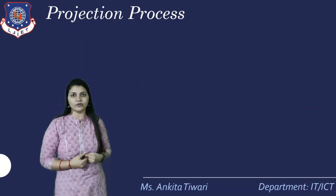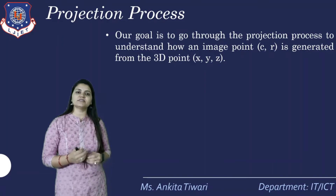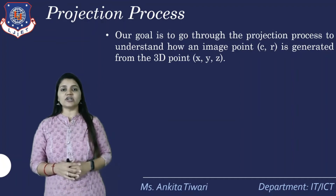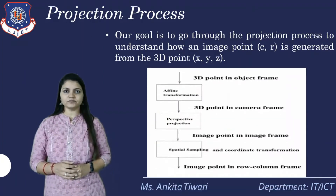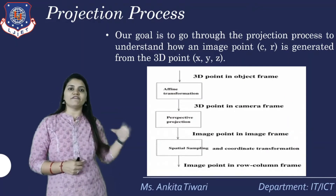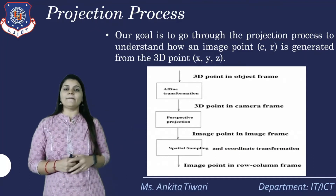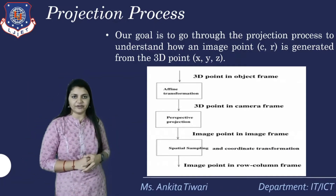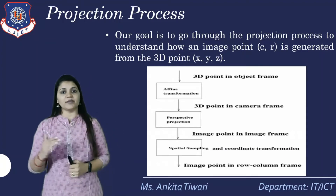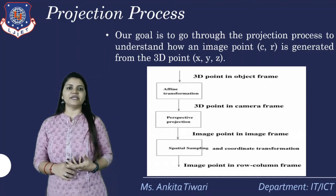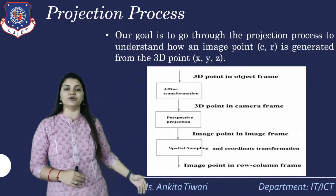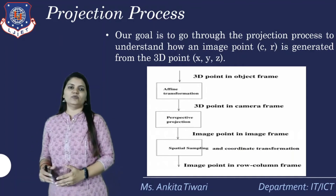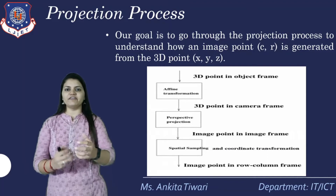The projection process goal is to understand how an image point (C, R) is generated from a 3D point (X, Y, Z). First, the 3D point in the object frame undergoes an affine transformation — a combination of rotation and translation — giving the 3D point in the camera frame. Then perspective projection gives the image point in the image frame. Finally, spatial sampling transforms the coordinate from 3D to 2D, placing the point in the row-column frame as a 2D point.